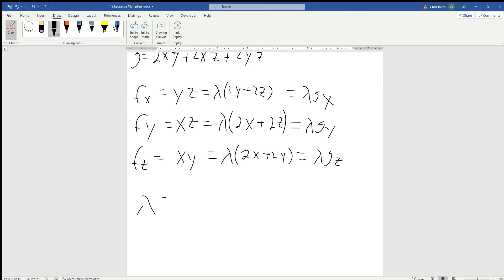If we solve each of them for lambda, it's pretty easy. We would just divide each of the sides by whatever the coefficient of lambda is. We would get that yz over 2y + 2z is equal to xz over 2x + 2z, and then finally xy divided by 2x + 2y is going to be equal to our lambda.